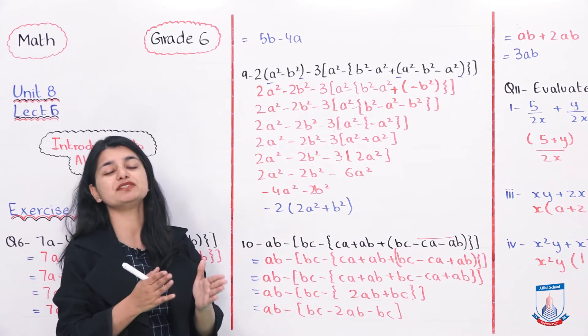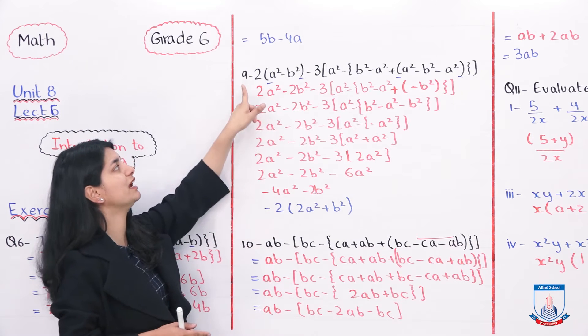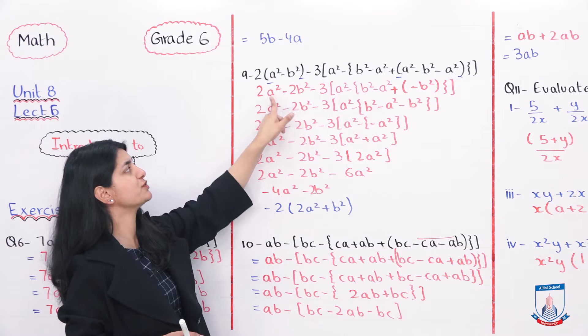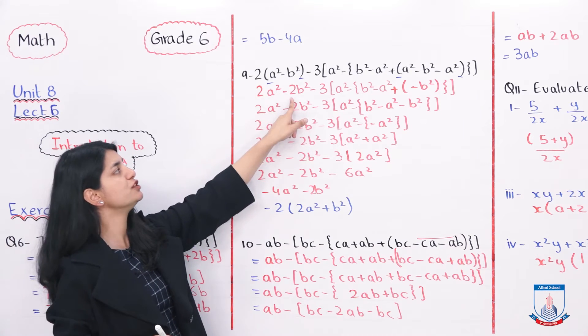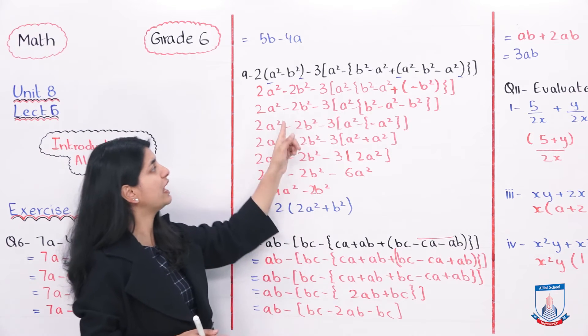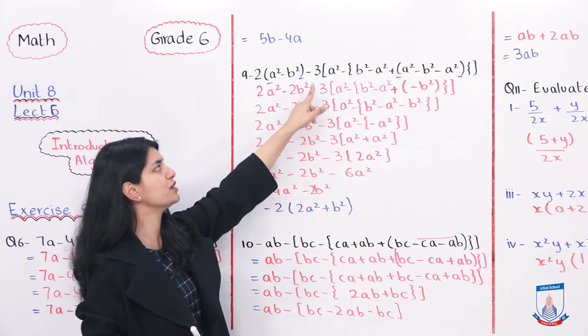So if you look at this, A square minus B square aapas mein solve nahi ho sakti. Aap usko baahir wale number se multiply karenge. 2 into A square, 2A square, 2 into B square minus 2B square. So 2A square minus 2B square likhi hai, humne yeh pehla parenthesis tha, usko open kar liya. Then we'll go on copying the entire question minus 3. Humara bracket aagaya, A square minus R braces,